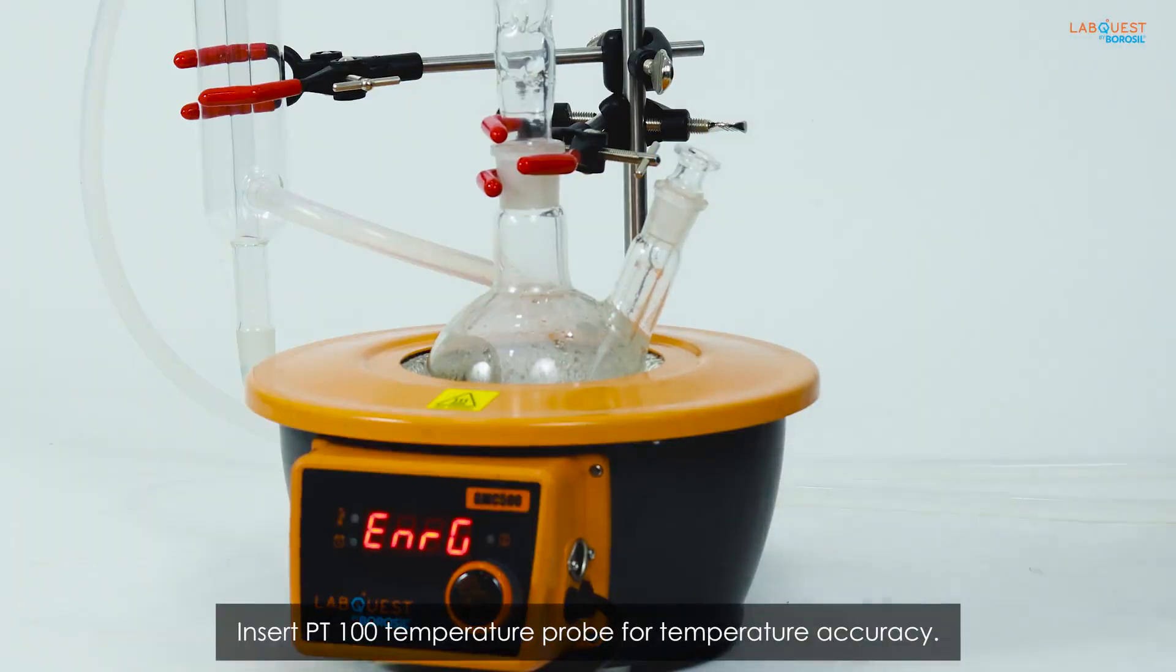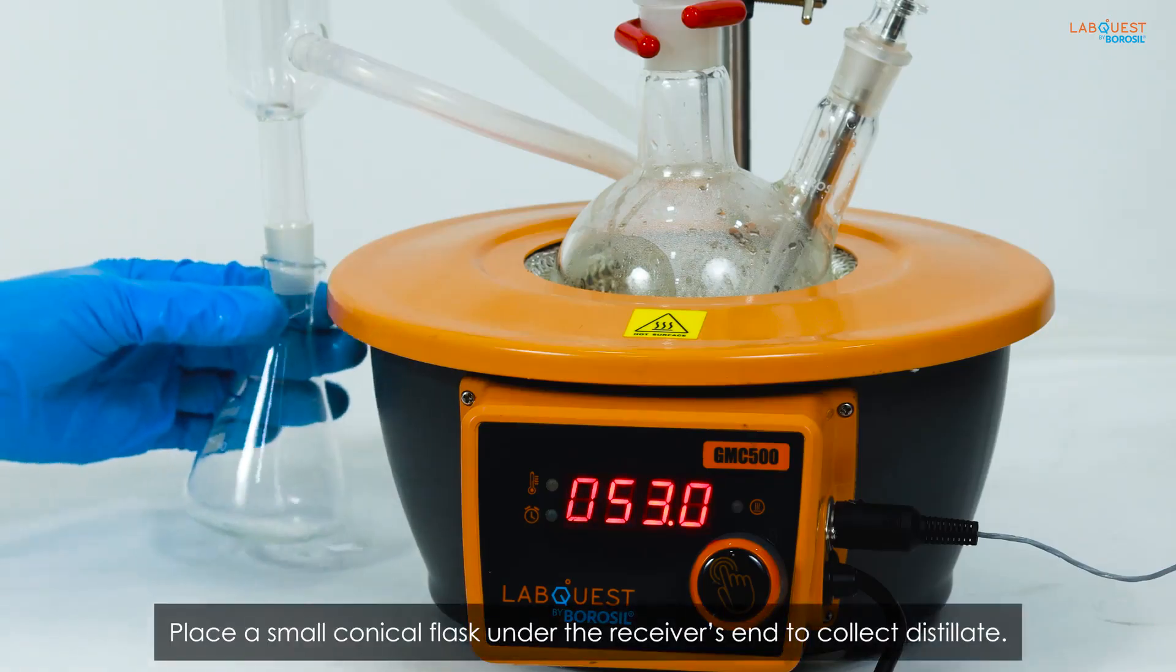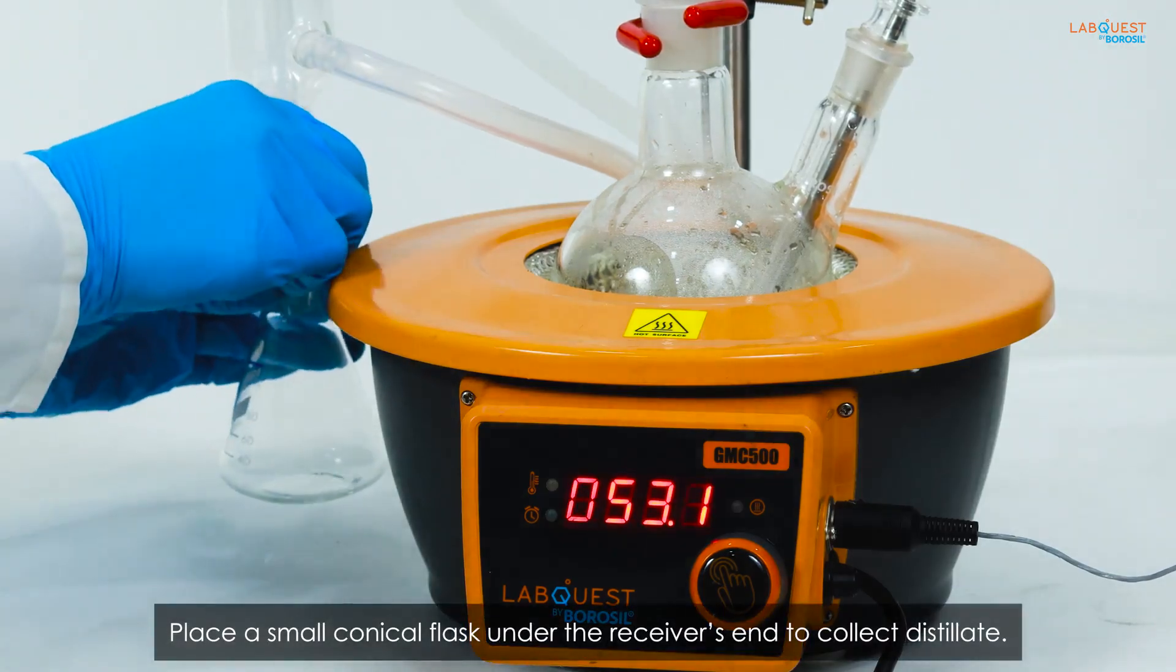Insert PT100 temperature probe for temperature accuracy. Place a small conical flask under the receiver's end to collect distillate.